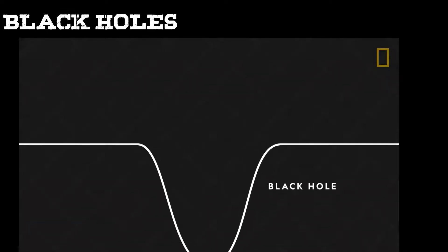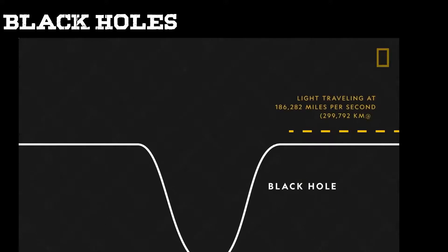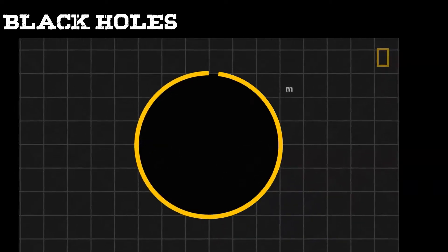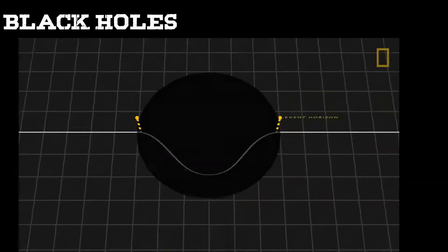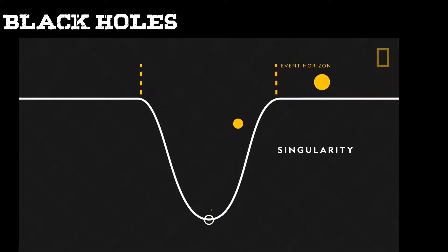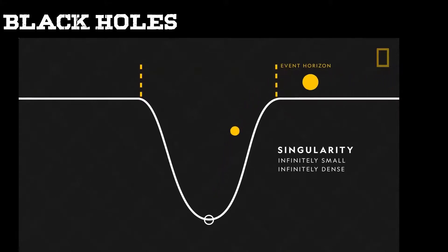A black hole is a region in space where the force of gravity is so strong that not even light — the fastest known entity in our universe — can escape. The boundary is called the event horizon, a point of no return. Beyond it, things collapse into the black hole's singularity: an infinitely small, infinitely dense point where space, time, and the laws of physics no longer apply.